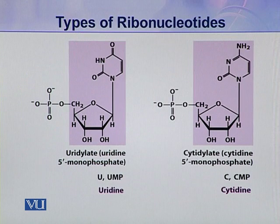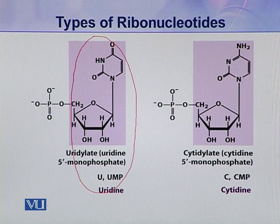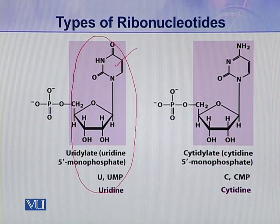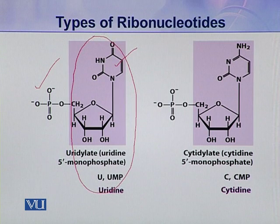Next, here are two other types of ribonucleotides. This coloured portion is uridine because the nitrogenous base present here is uracil. When one phosphoric acid group is attached to this uridine, it becomes uridylate — the third type of ribonucleotide present in nucleic acids.